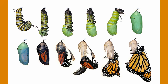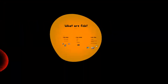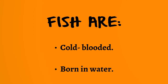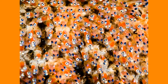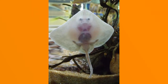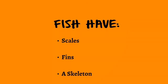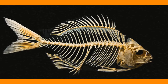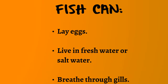Fish are vertebrate animals — they have a backbone — and live underwater, breathing using gills. Fish are cold-blooded and born in water. These are clownfish eggs; you can see the little eyes on them. This is a fish that puts all of its eggs in its mouth to protect them, and this is a baby stingray. Fish have scales, fins, and a skeleton. They can lay eggs, live in freshwater or saltwater, and breathe through gills.